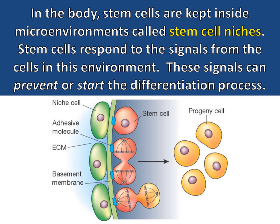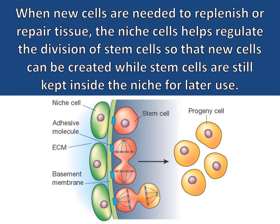In the body, stem cells are kept inside micro-environments called stem cell niches. Stem cells respond to the signals from the cells in this environment, and these signals can prevent or start the differentiation process. When new cells are needed to replenish or repair tissue, the niche cells help regulate the division of stem cells so that new cells can be created while stem cells are still kept inside the niche for later use.